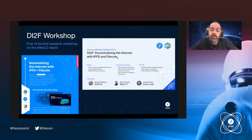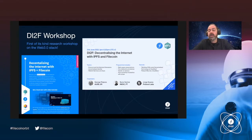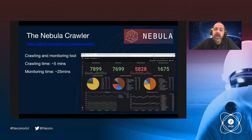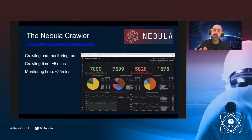It all started with a great workshop we organized back in June called DI2F, focused on decentralizing the internet with IPFS and Filecoin. We had great sessions with top researchers and scientists from around the world, demos, and a hackathon. One of the great results was the Nebula crawler, designed and implemented by one of the community members — a crawling tool that let us start crawling the network more systematically to find out what's going on inside the nuts and bolts of IPFS.